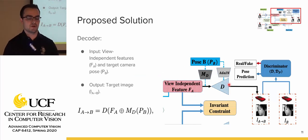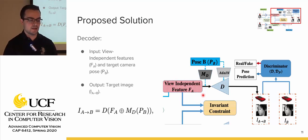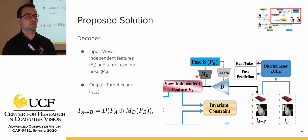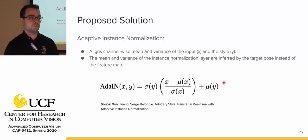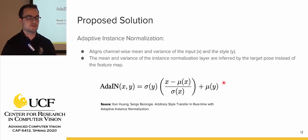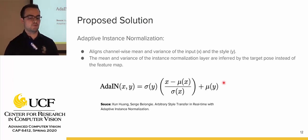The next component is the decoder, which takes the view-independent features and a target pose and generates a new synthetic target image. The MD network is an embedded network to account for the difference in channel number between the pose and the view-independent features. Adaptive instance normalization — an extension of instance normalization — aligns the channel-wise mean and variance of the input and a style, commonly used in style transfer. Here, the mean and variance of the instance normalization layer are inferred by the camera pose instead of the feature map.